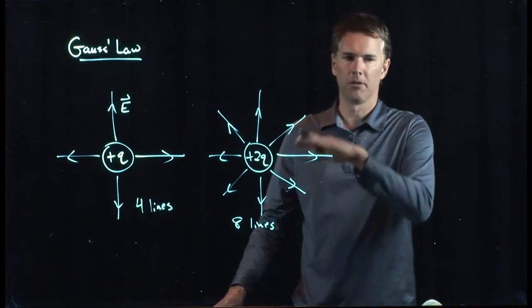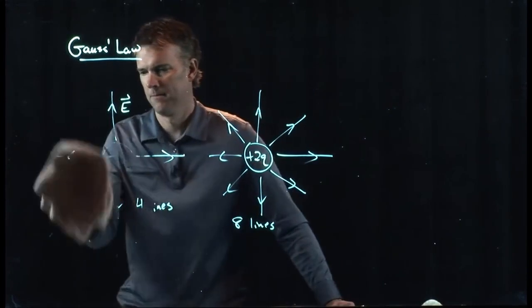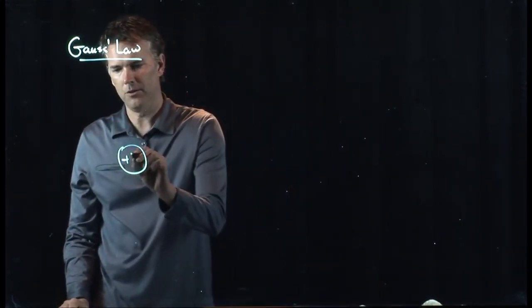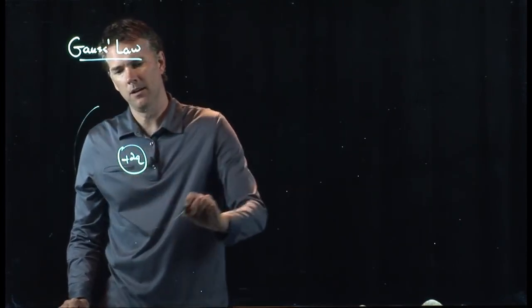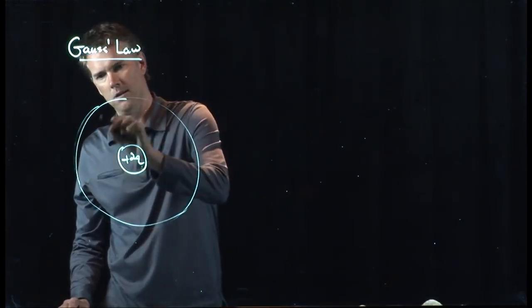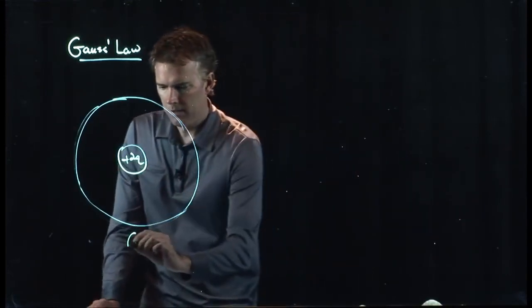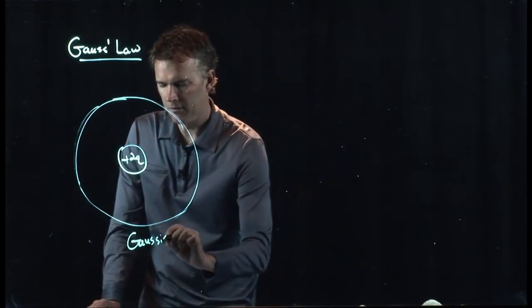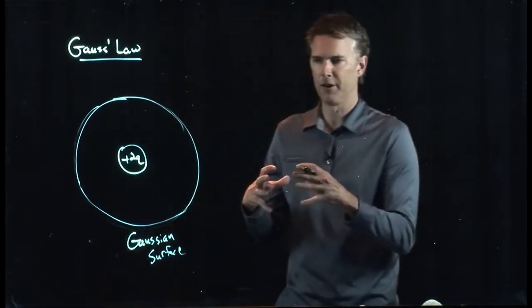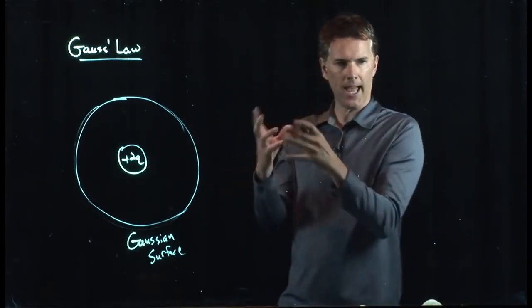And that's, let's draw some spheres around these things. So here's my plus 2q. I'm going to put a spherical shell all the way around. Hopefully you can see that. And that shell is called a Gaussian surface. In this case, it's a spherical shell. So think like a basketball, right? Just the outside edge of a basketball.